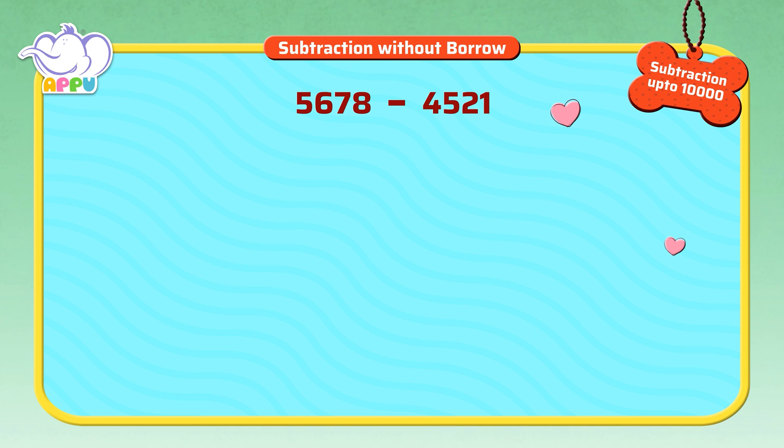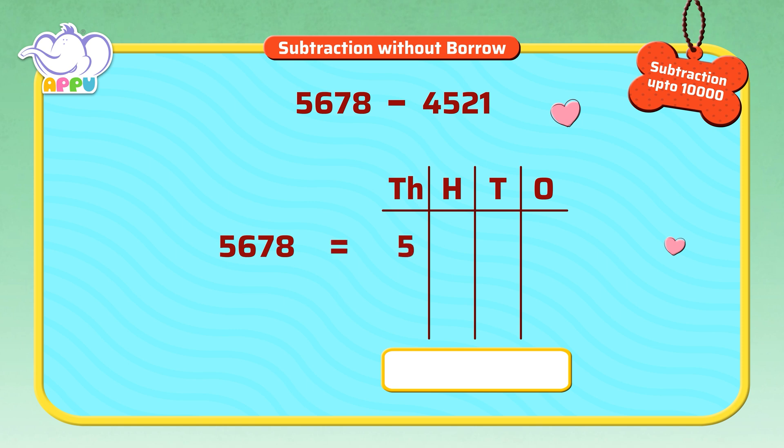So we write 5,678 as thousands, hundreds, tens, and ones. Which is five thousands, six hundreds, seven tens, and eight ones. And 4,521 as four thousands, five hundreds, two tens, and one ones.